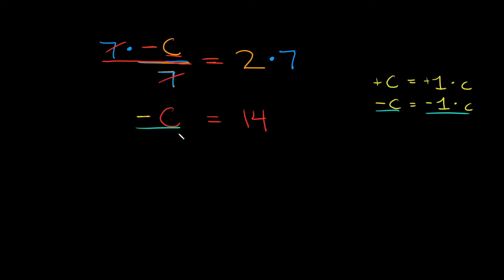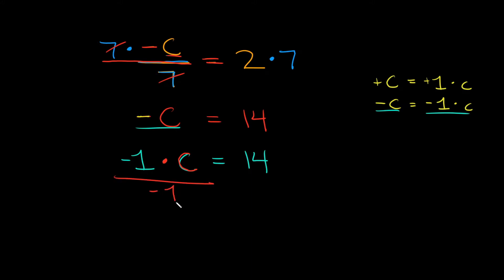So I'm going to rewrite this negative c as negative 1 times c, and set that equal to 14. The point is to isolate the variable c, so in order to undo this multiplication by negative 1, I'm going to divide by negative 1. Remember, what you do to one side you do to the other, so I'm going to divide by negative 1 over here also.